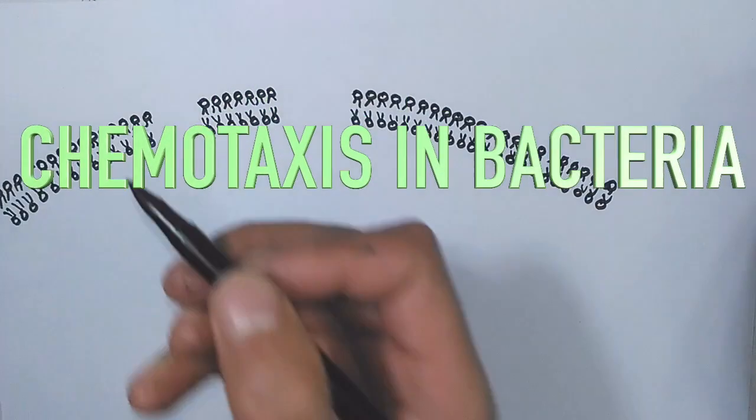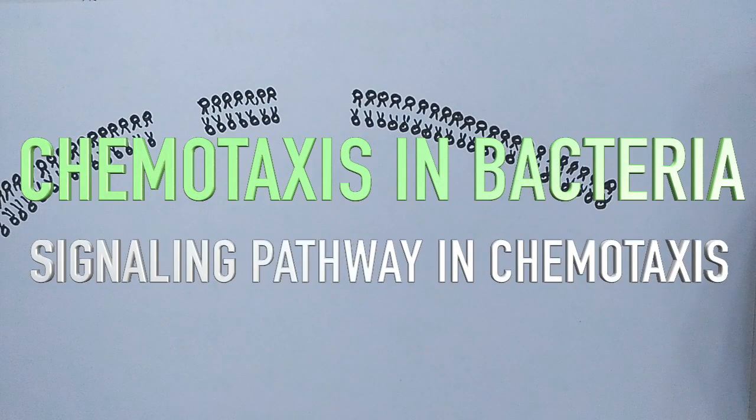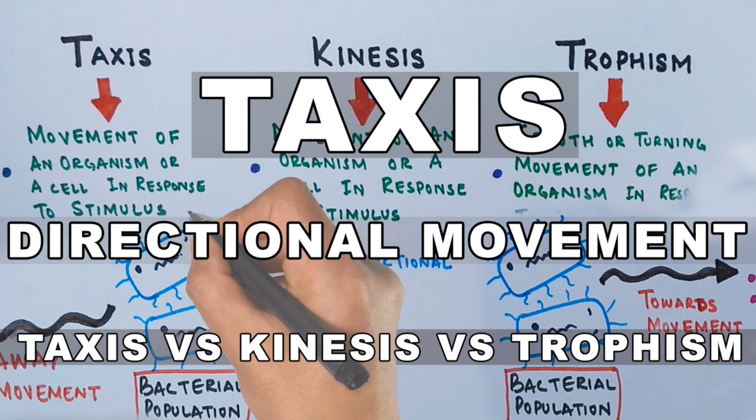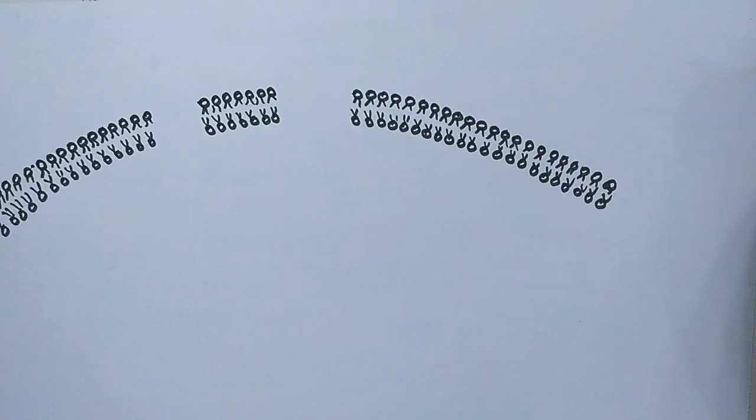This is the video of chemotaxis signaling in bacteria and its impact on flagellar movements. Before we discuss the signaling pathway, there is a video regarding taxis and a basic overview of what taxis is. If you want to watch that video first, there is a link in the i button or you can find it in the description.